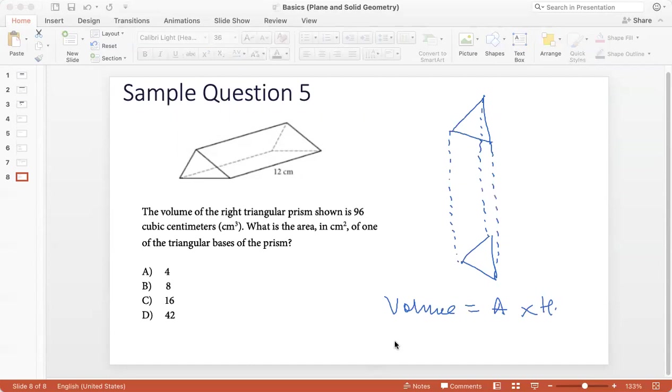So the volume of this figure is going to be area of the base into height because it rises straight. Now volume is given as 96. Area of the base is what we have to find and the height is 12. So what would be the area of the base? 96 over 12. 12 7s are 84. 12 8s are 96. So the area of this triangular base of the prism would be 8 centimeters squared.